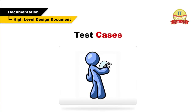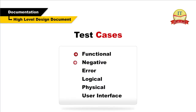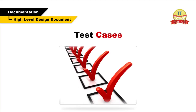Test cases involve the set of steps, conditions, and inputs which can be used while performing testing tasks. The main intent is to ensure whether the software passes or fails in terms of its functionality and other aspects. There are many types of test cases like functional, negative, error, logical, physical, and UI test cases. Test cases are written to keep track of testing coverage of software. Generally, there is no formal template used during test case writing. However, the main components which are always included in every test case are as follows.